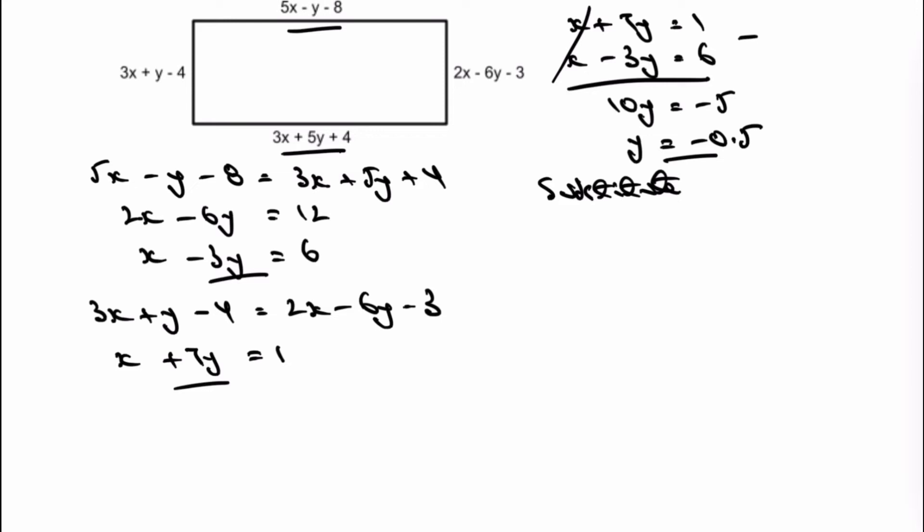But I'm going to use x plus 7y equals 1. So I've got x plus 7 multiplied by negative 0.5 equals 1. And when I work all of that out, I get x equals 4.